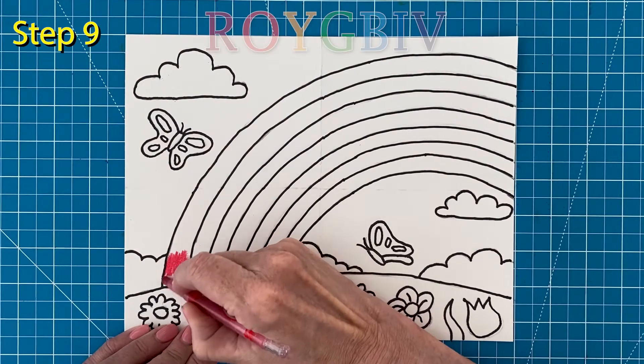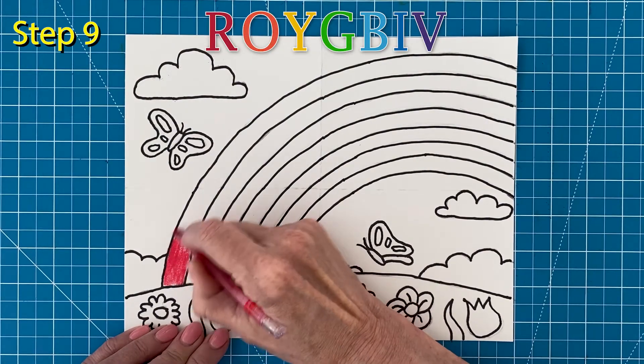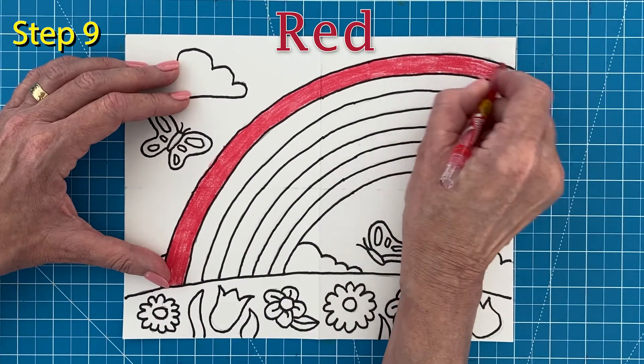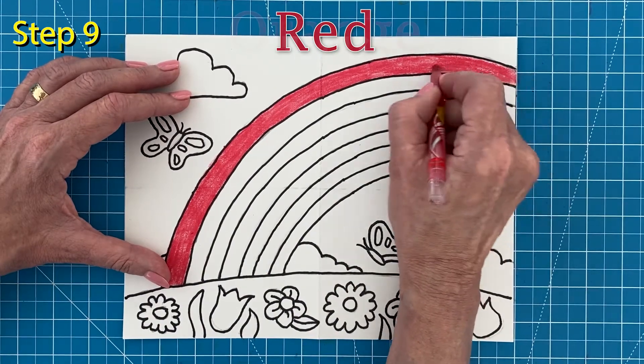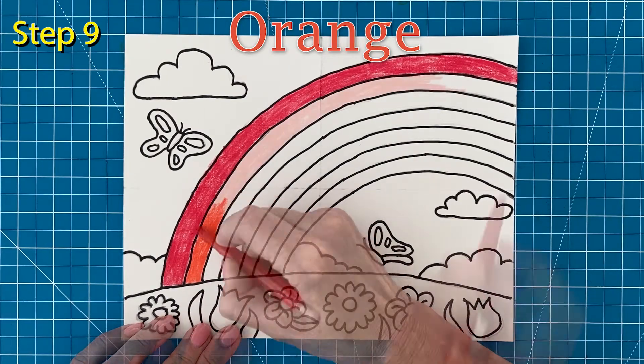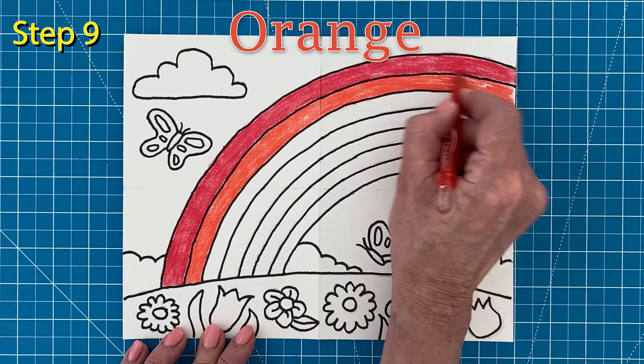And now for the coloring. I'm going to follow the Roy G. Biv model that's been around for a while. So the letter R stands for red. Next comes the letter O for orange. Remember to press hard to get lots of color.